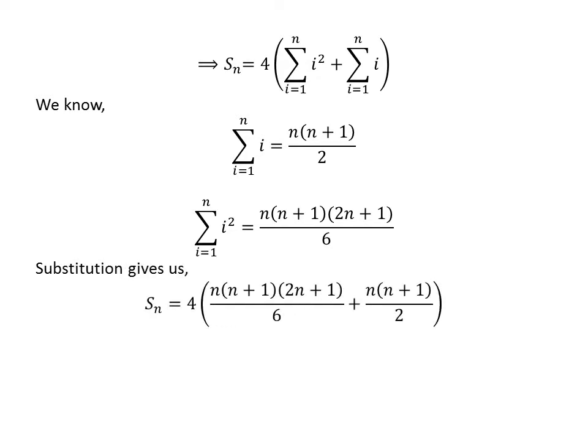We also know the sum of squares of the first n natural numbers is equal to n times (n plus 1) times (2n plus 1) divided by 6. The video explaining this derivation is appearing in the upper right corner, and the link has been mentioned in the description section.